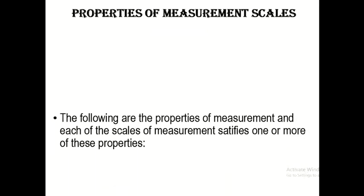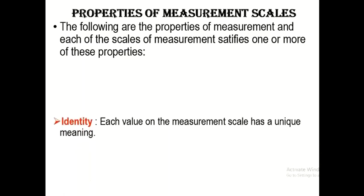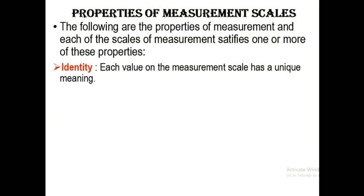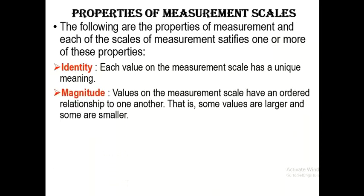Every measurement scale is expected to satisfy one or more of four properties. The first property is identity: the scale of measurement must have a value on the measurement scale that has a unique meaning. For example, if I assign the number one, it is to identify something and has that unique meaning in its own case. The second property is magnitude.